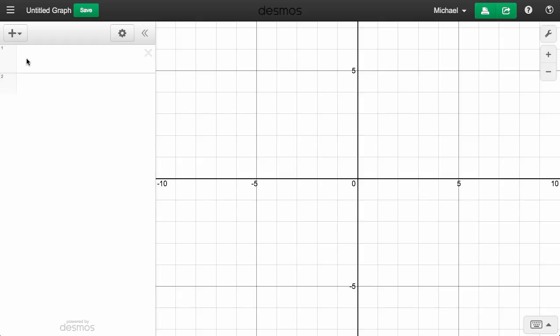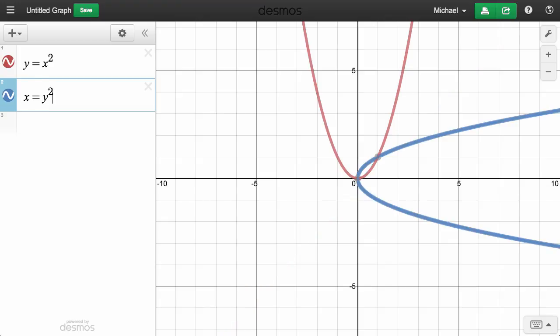Welcome to a quick video tutorial on graphing inverses in Desmos. Let's start with a simple quadratic, y equals x squared. To graph the inverse, simply reverse the variables, x equals y squared.